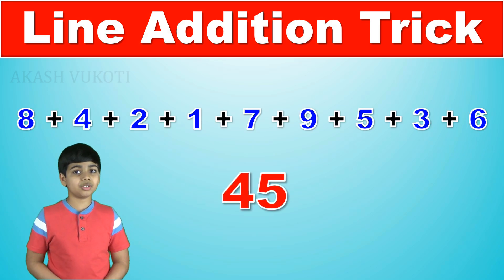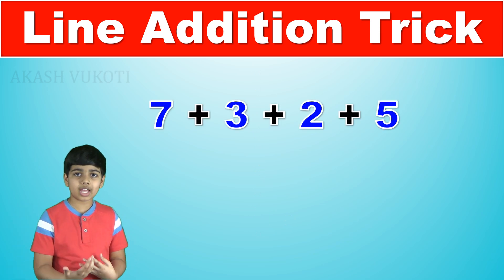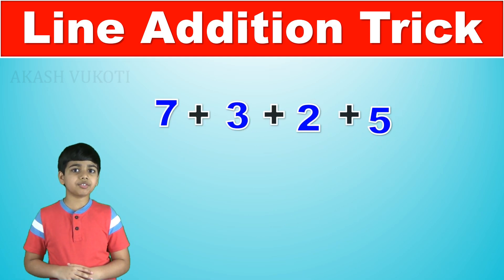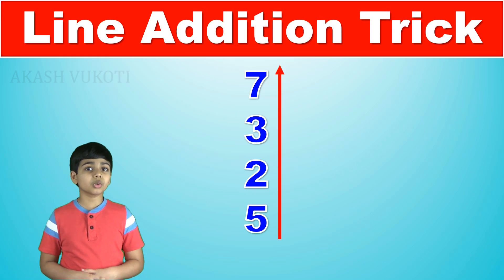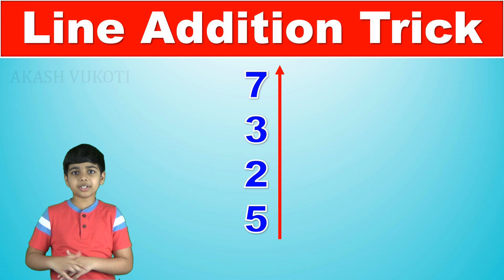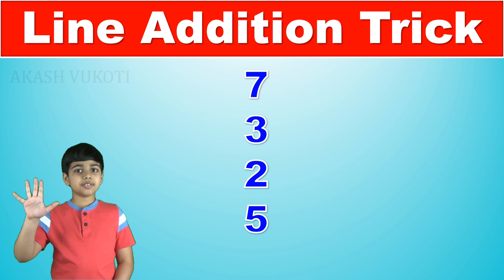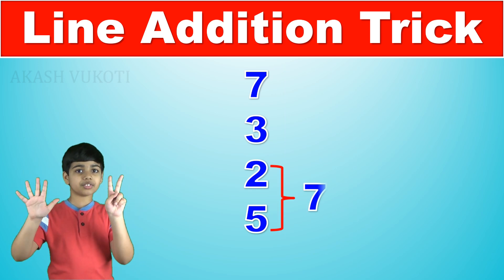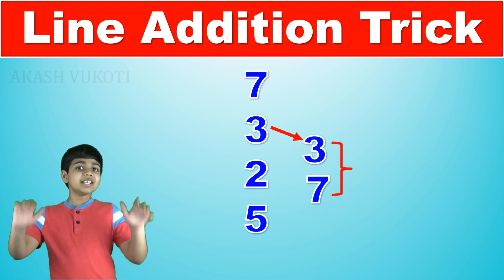Let's do an easier one now like 7 plus 3 plus 2 plus 5. We begin adding from bottom to top and every time you add up to or over 10 then drop a 10. We start from bottom to top which means that the first number is 5. 5 plus 2 is 7 and then 7 plus 3, the next number in the list, is 10.